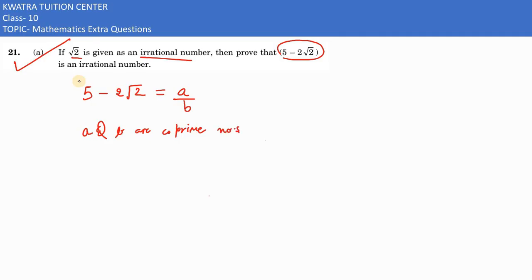Now first of all, you need to take 5 to the other side. So what will you have on the left side? Minus 2 root 2. On the right, a over b minus 5 is there, so left side is nothing but negative of 2 root 2.